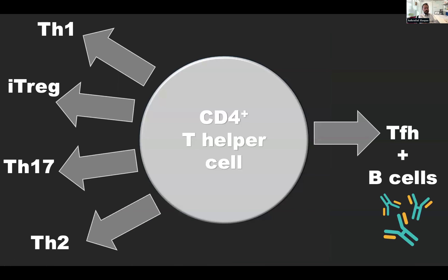We're interested in those cells because they can be activated during an infection to form many different states. In our chosen infection, we're interested in cells that develop into a T helper one cell and cells that develop into a T follicular helper cell. These are important because they can protect against blood stage Plasmodium infections via more than one mechanism — of prime importance is the ability of TFH cells to persuade and assist B cells in making antibodies that are ultimately protective.